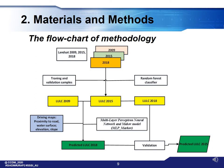The methodology flowchart shows Landsat imagery for three years — 2009, 2015, and 2018 — processed using training and validation samples with a random forest classifier to generate LULC maps. Driving factor maps including proximity to road, water surface, elevation, and slope were also used. A multi-layer perceptron neural network and Markov model were then applied to produce a predicted LULC for 2018, which was validated against the actual 2018 map to generate the predicted LULC for 2025.